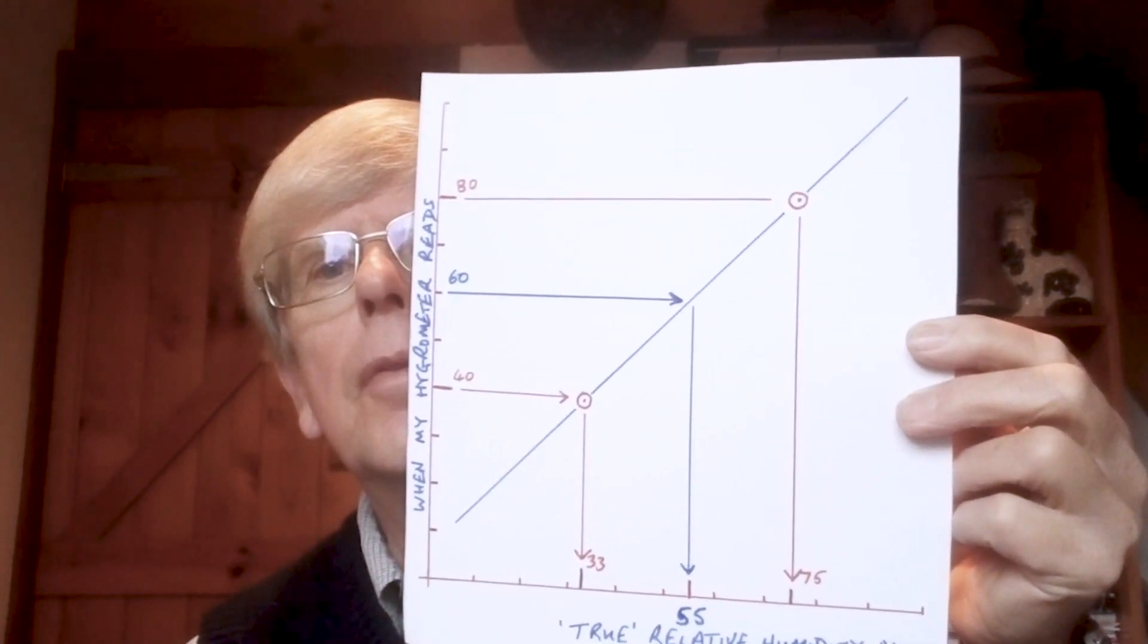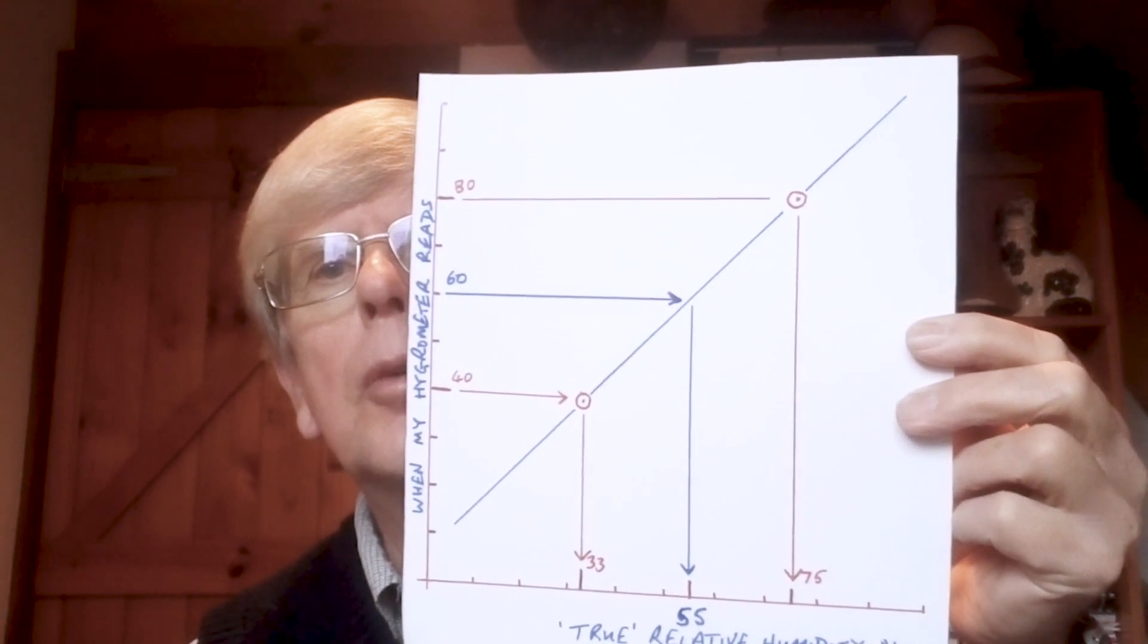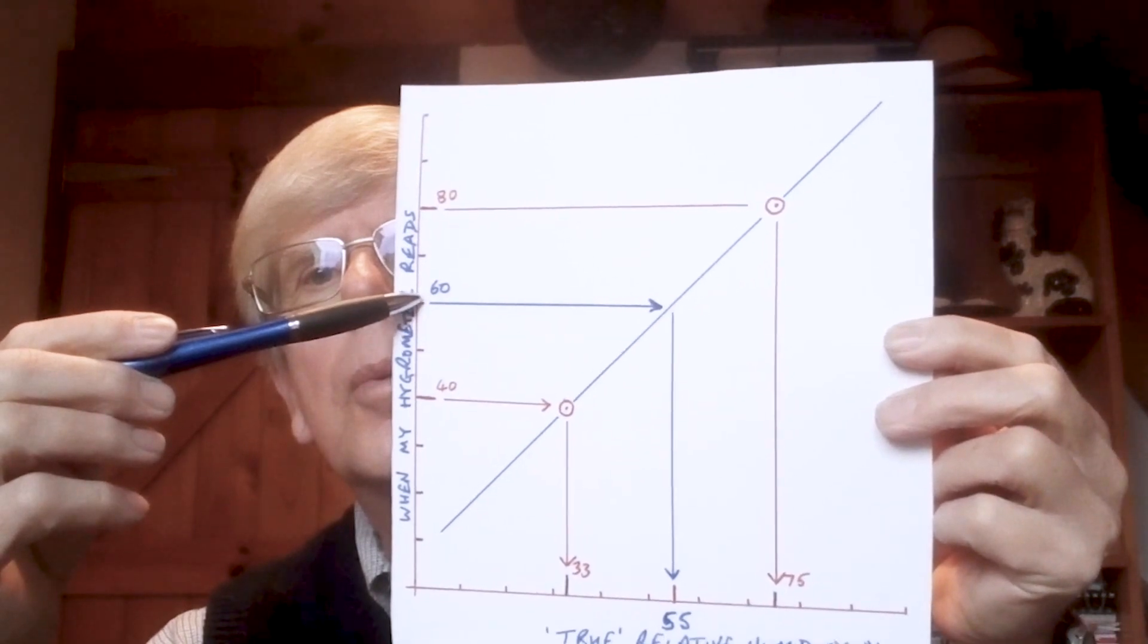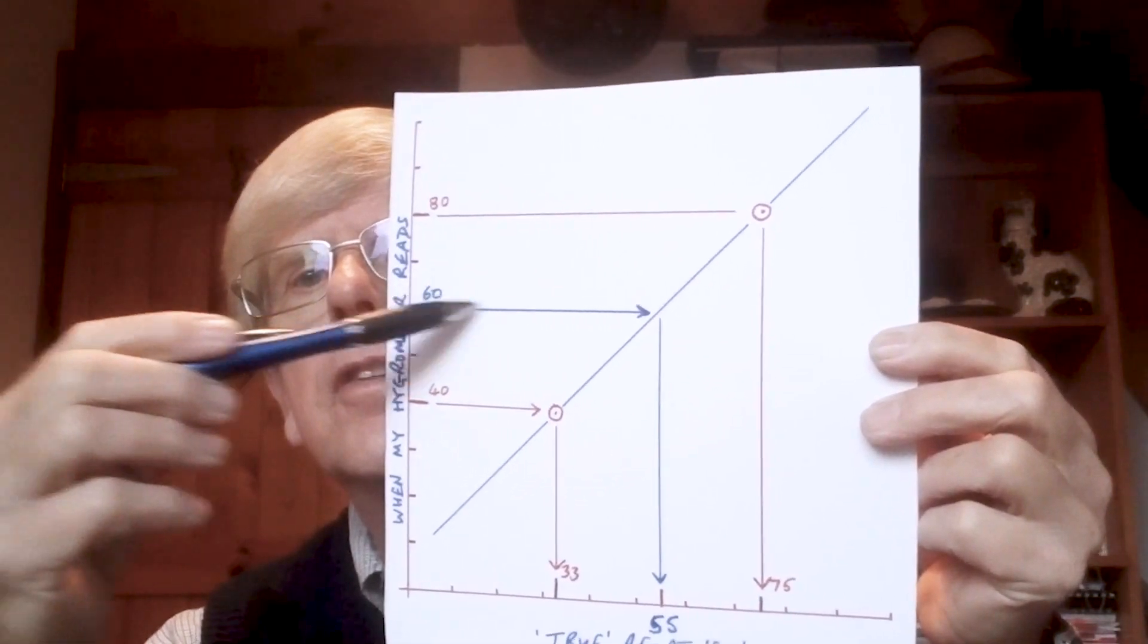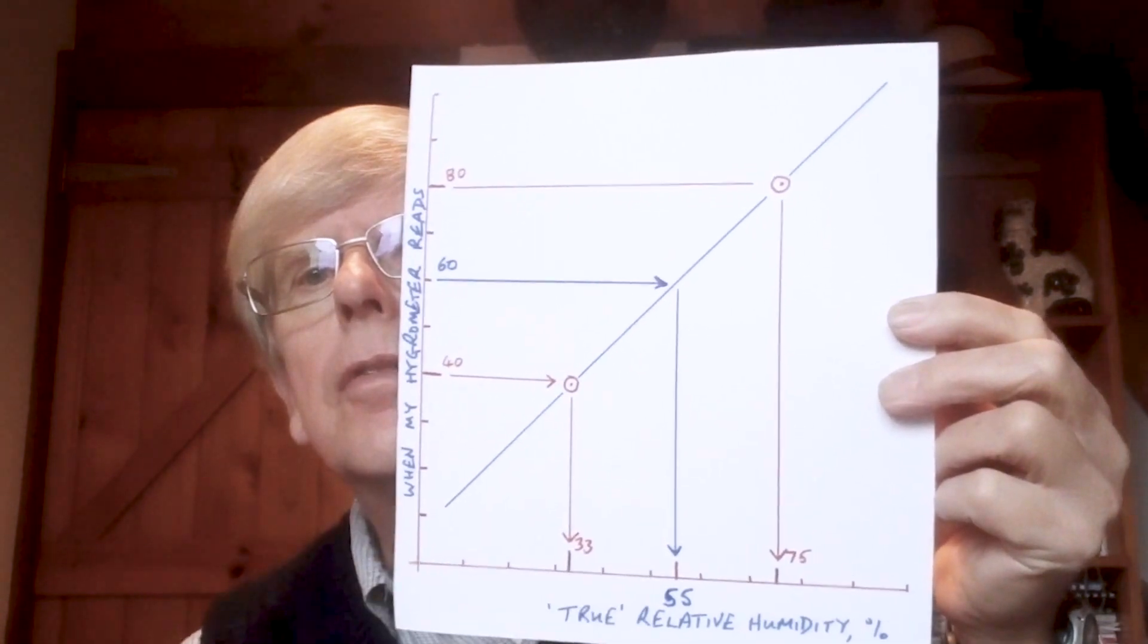So now, you've had to do this because actually you want to read relative humidities round about the 60 mark, 50 mark. So you want to know, well, when my hygrometer reads 60, the true relative humidity is 55.